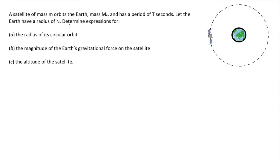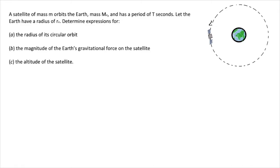A and c are not the same. The radius of the circular orbit would be the distance from the satellite to the center of its circular motion. The altitude of the satellite would actually be a little bit smaller. But we'll get to that in a second.